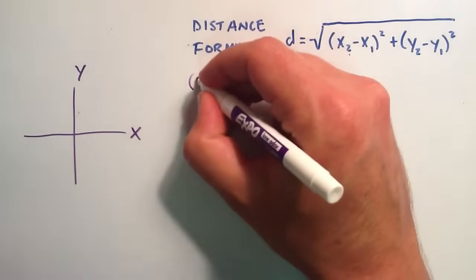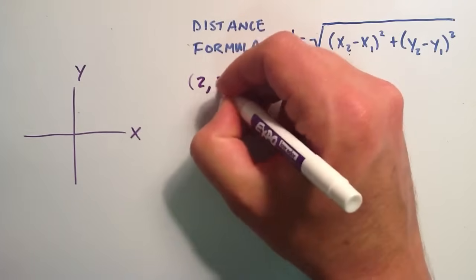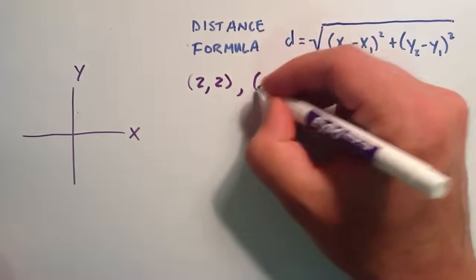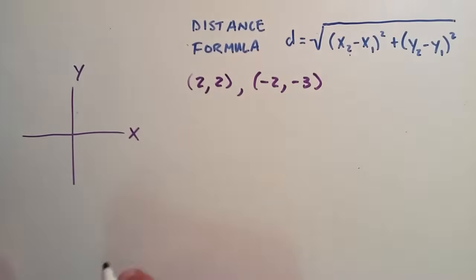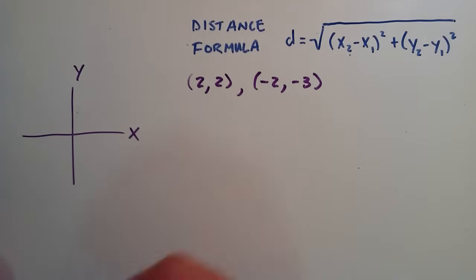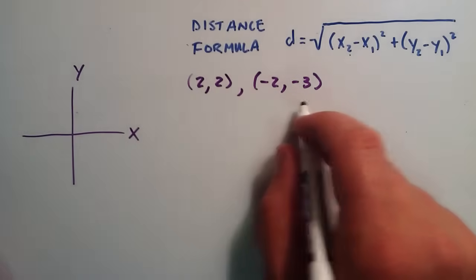So let's say that we have two points. Let's say the first point is (2,2), and the second point is (-2,-3), and we want to find the distance between these two points. So to get a visual understanding of this, let's go ahead and graph these.